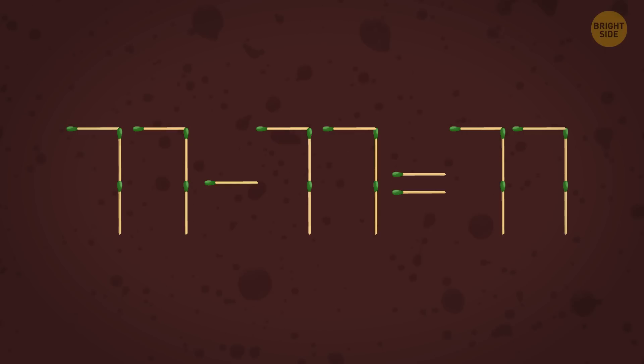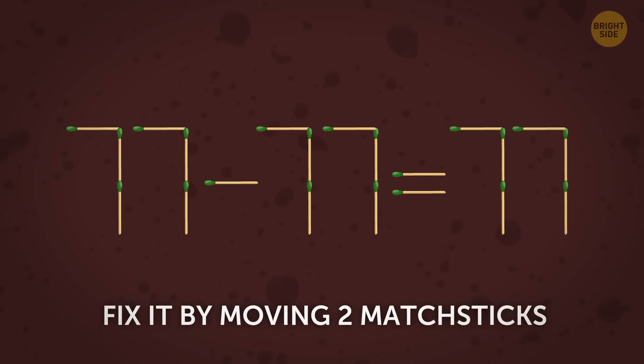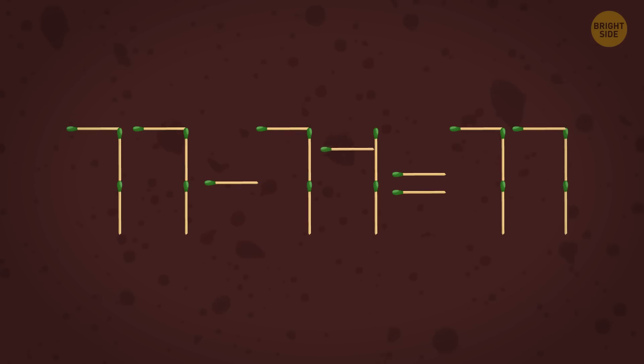Ready for the next puzzle? This equation contains an obvious mistake. 77 minus 77 is not equal to 77. But you have a chance to fix it by moving 2 match sticks. Can you make it correct? Here's the solution.